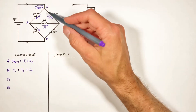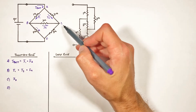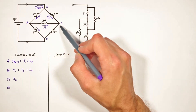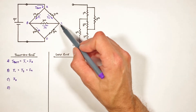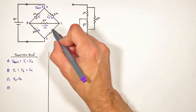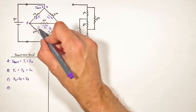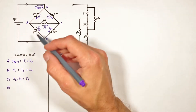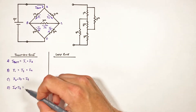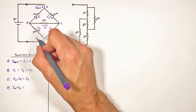At junction C, current I2 runs in, and since we decided I3 flows from B to C, I3 also runs into junction C. So I2 + I3 = I5, where I5 is the current through the 5 ohm resistor running out. At junction D, I4 and I5 run in and together equal I_battery going back into the battery.